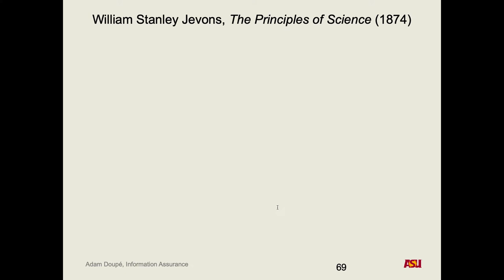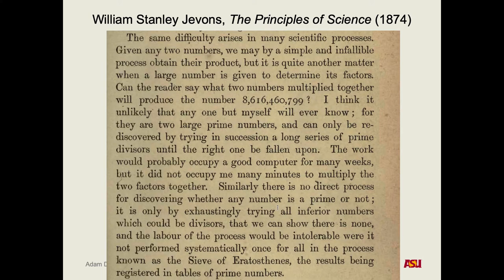So this is a super interesting paper from 1874 talking about this. The quote reads: 'The same difficulty arises in many scientific processes. Given any two numbers, we may by a simple and infallible process obtain their product.' What's that talking about? Multiplying two numbers — you've been doing that since elementary school. 'But it is quite another matter when a large number is given to determine its factors.' To go back from a large number and determine what two numbers multiply together to get that. So multiplication is easy to go one way, but difficult to go the other.